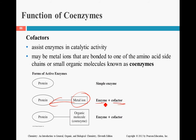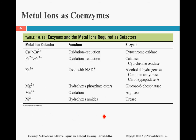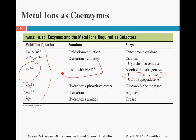Metal ions are just cofactors; organic molecules that bind to enzymes are called coenzymes, and both terms fall under cofactors. These metals all bind to different enzymes to make them function better. For instance, zinc bound to carbonic anhydrase makes that reaction occur faster.